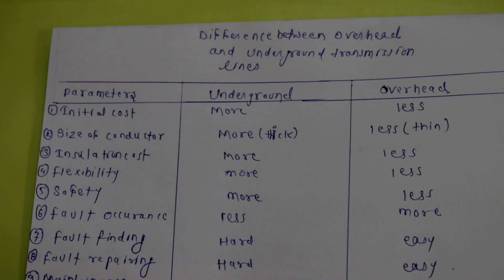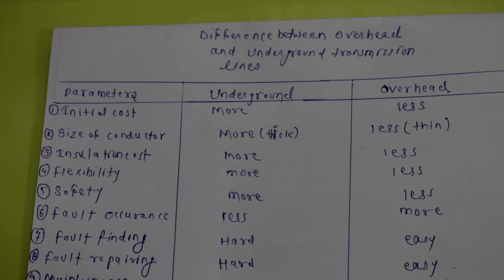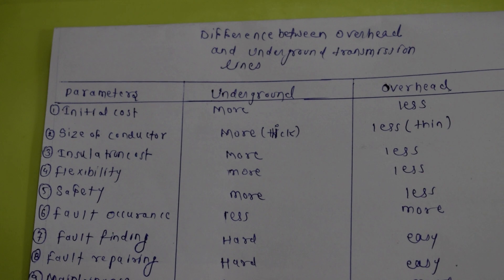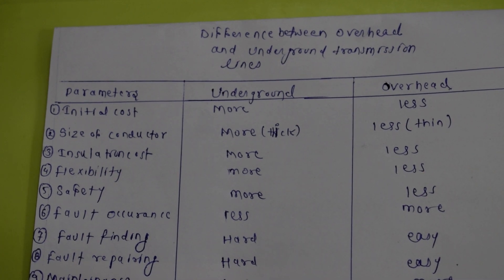Unlike overhead lines, underground lines have to account for things like buildings and other structures. We have to plan all of this. That is why flexibility remains more in underground than overhead.